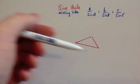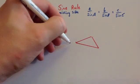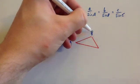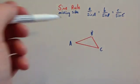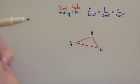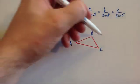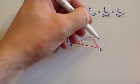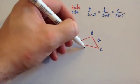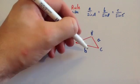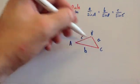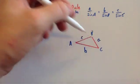So if we've got a triangle, let's label the angles first of all. We label the angles capital A, capital B, and capital C — it's normal to label the angles with capital letters. Then the sides opposite the angles would be little a, little b, and little c. So little a is opposite capital A, little b is opposite angle B, and side c is the side opposite angle C.